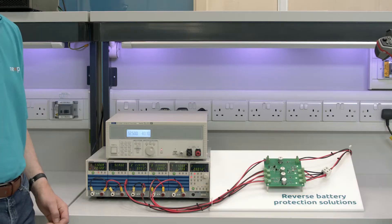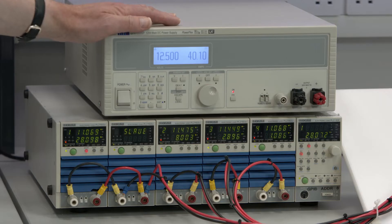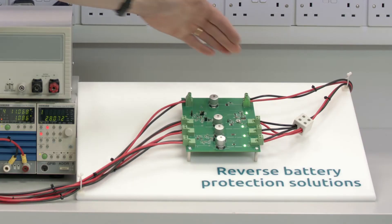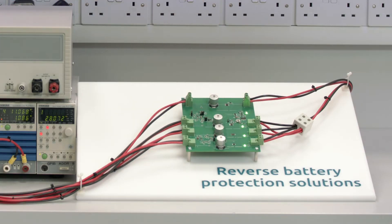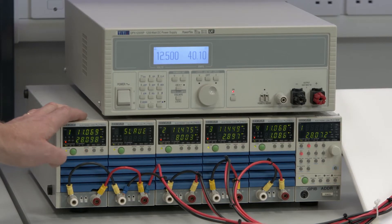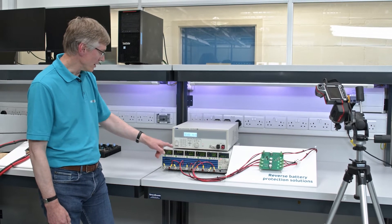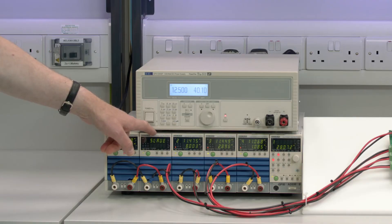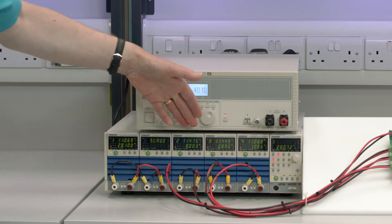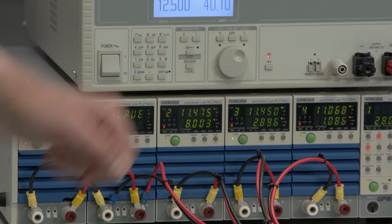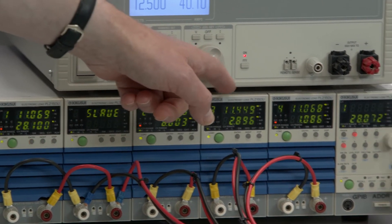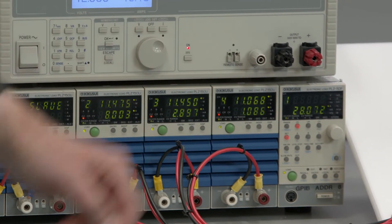So in this demo we have a 50 amp power supply feeding the circuit here. We have an electronic load which is configured as four independent channels, so we have a big load here for the N channel MOSFET and another load for the P channel MOSFET and then a load each for the two diodes.